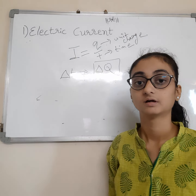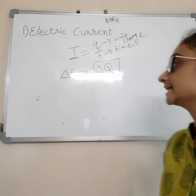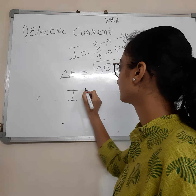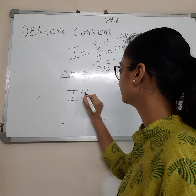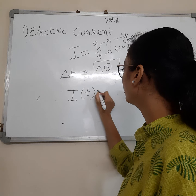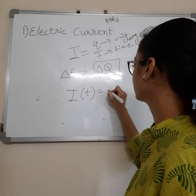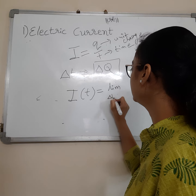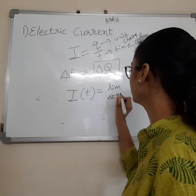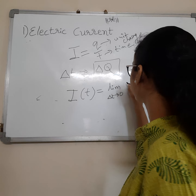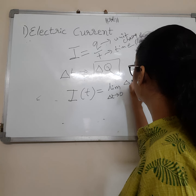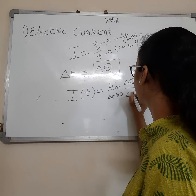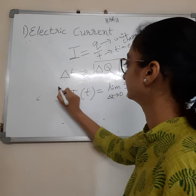Now, if we take current for time interval T, then current I is equal to Q by T, where T is the unit time and Q is the unit charge.